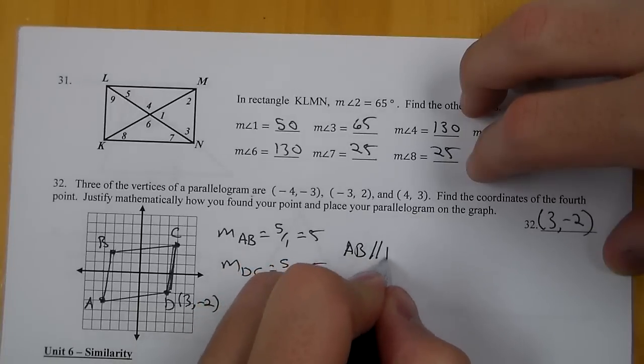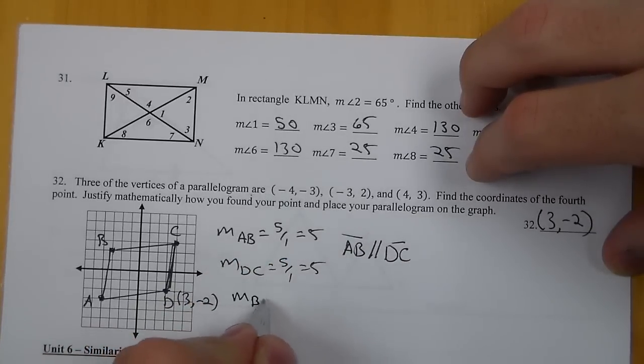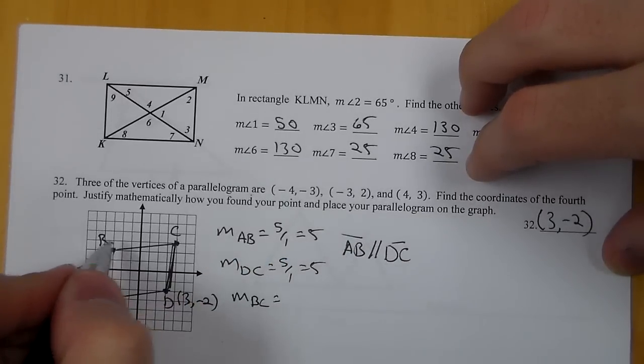Then the slope from D to C in this case was up five over one, so they were both the same. So AB was parallel to DC. The slope from B to C, I went up one over...